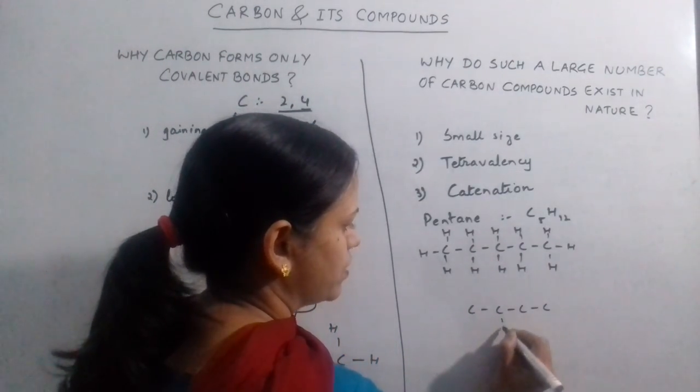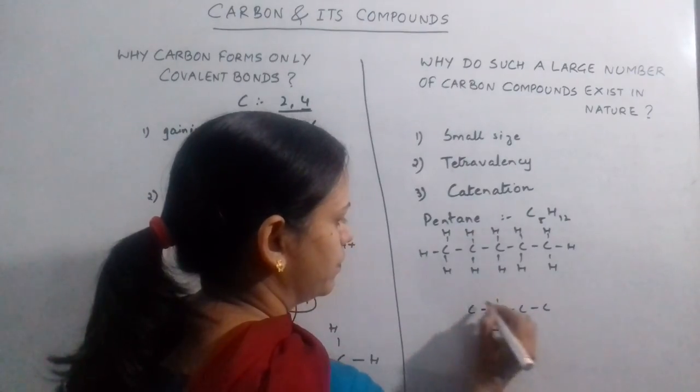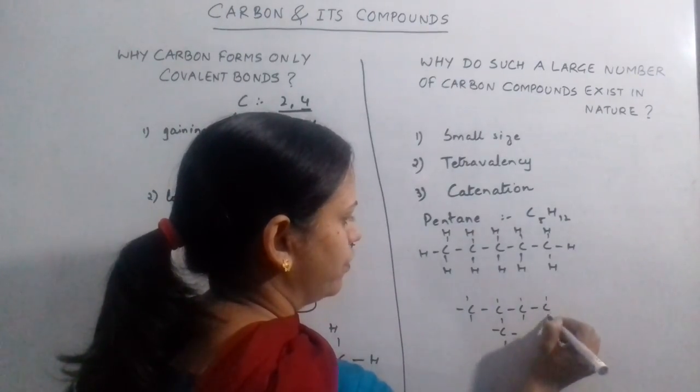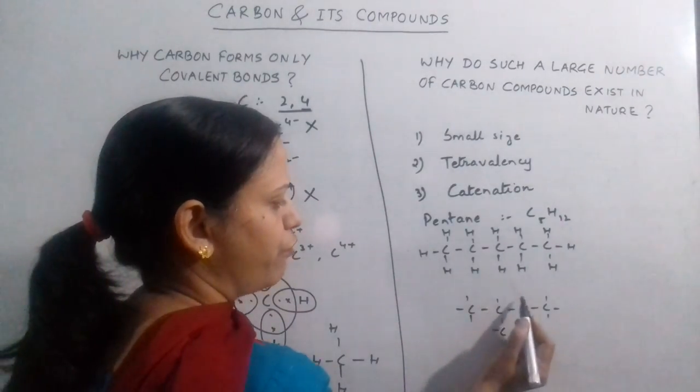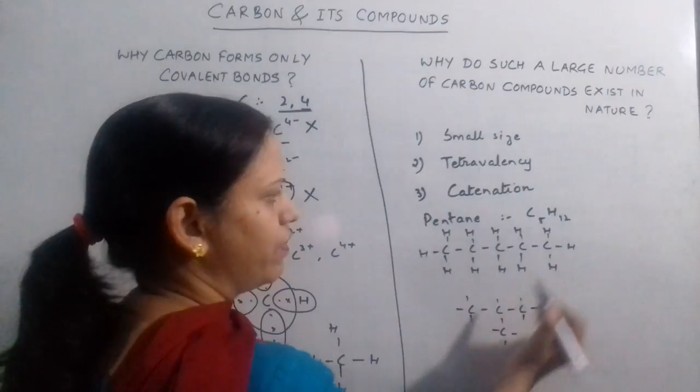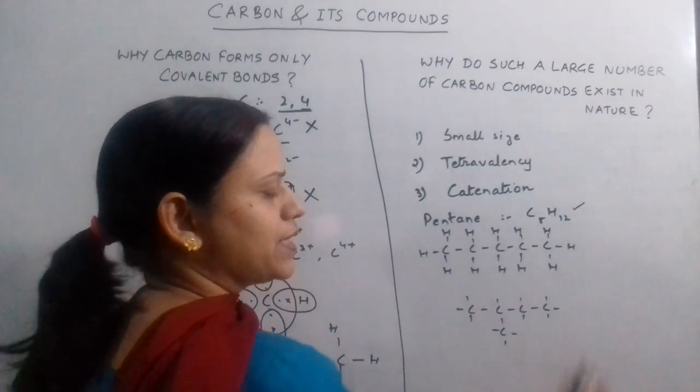If you make one branch, this is the second structure of pentane. If you count the number of lines - 1, 2, 3, 4, 5, 6, 7, 8, 9, 10, 11, 12 - the molecular formula comes out to be the same.